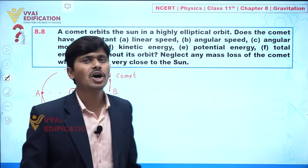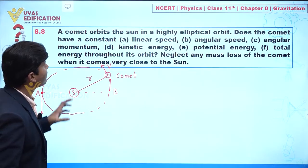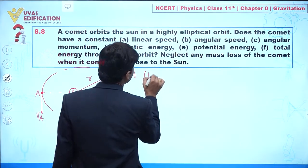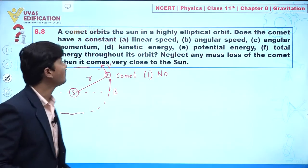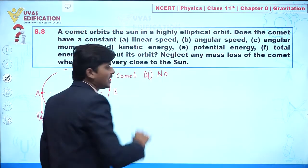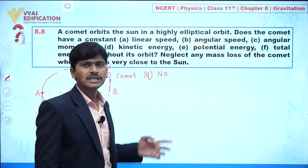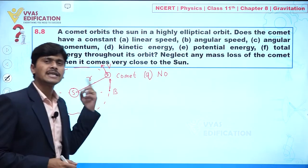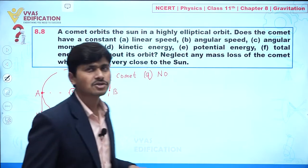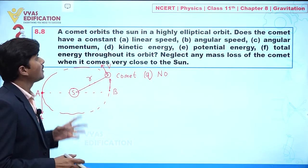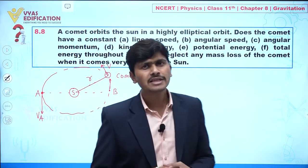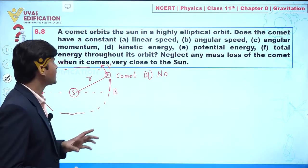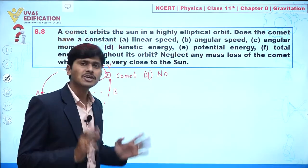When the comet is near the sun, its speed will be more compared to when it is far away. At each and every point, the velocity of the comet is changing. Therefore, linear speed does not remain constant. Also, the direction of velocity changes at every point, and the magnitude of velocity also changes. So the answer to part (a) is: No, linear speed is not constant.